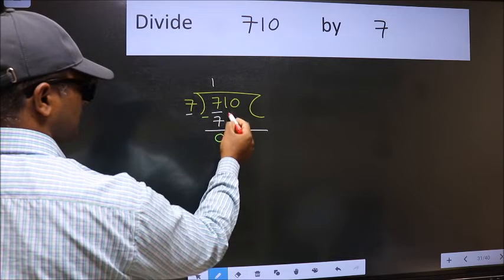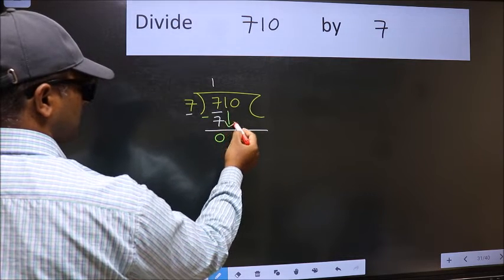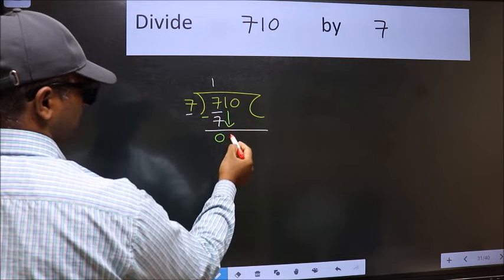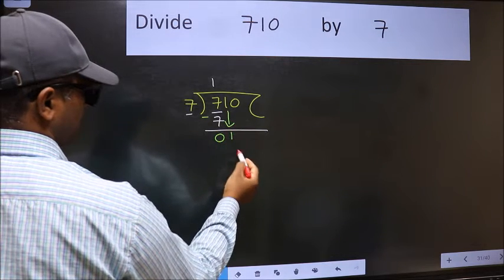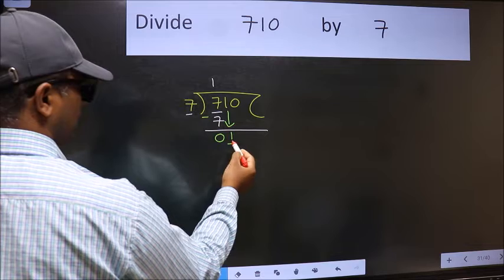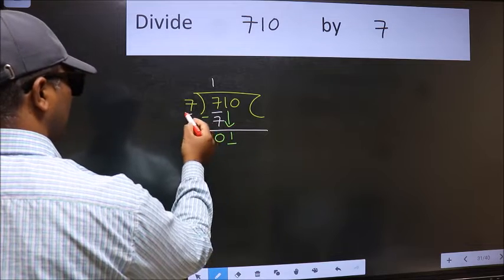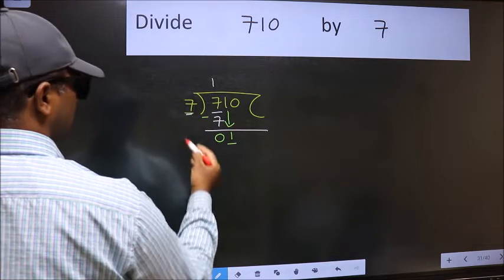After this, bring down the beside number. So 1 comes down. Now here we have 1 and here 7.